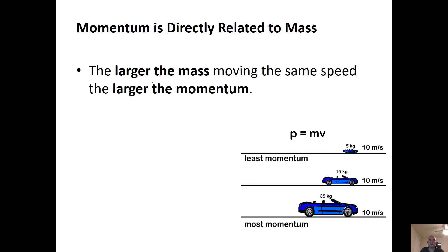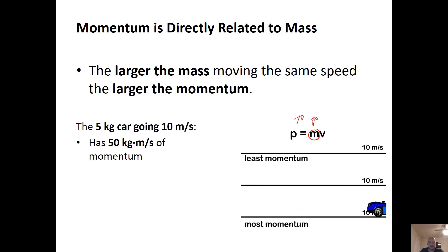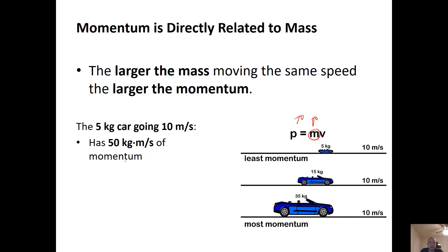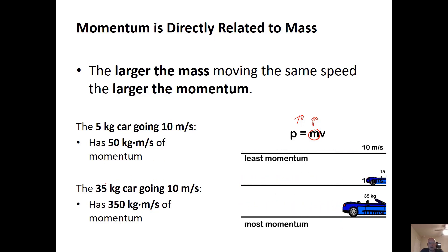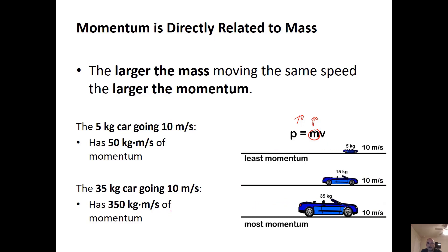Momentum is directly related to mass — the larger the mass moving at the same speed, the larger the momentum. A 5 kg car going 10 m/s has momentum of 50 kg·m/s. A 35 kg car going 10 m/s has momentum of 350 kg·m/s. The momentum changed because of the mass.